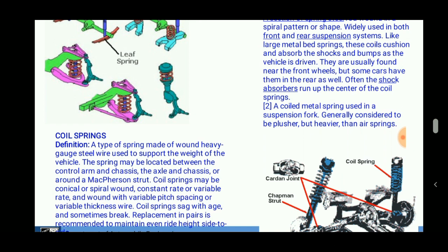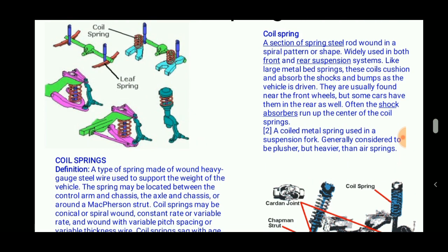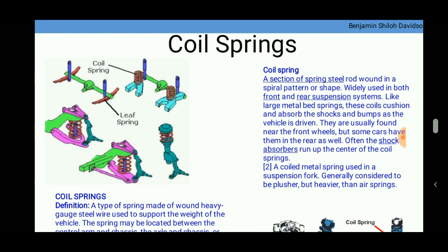It can be used in most automobiles in the front and the rear axles. And like large metal bed springs, these coil springs cushion and absorb the shocks and bumps as the vehicle is driven. They are usually found near the front wheels, but some cars have them in the rear wheels as well.